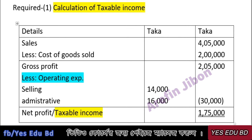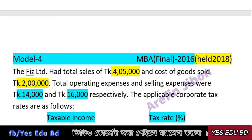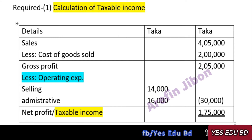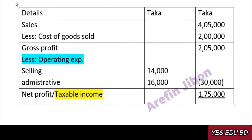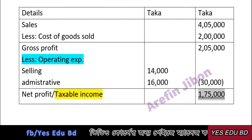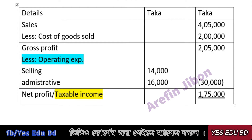Calculation of taxable income. Sales were 4,05,000. Less cost of goods sold 2,00,000. Operating expense 14,000 and selling expense 16,000. Total operating expenses 30,000. Taxable income comes to 1,75,000. After deducting total expenses of 30,000 from gross profit of 2,05,000, taxable income is 1,50,000.